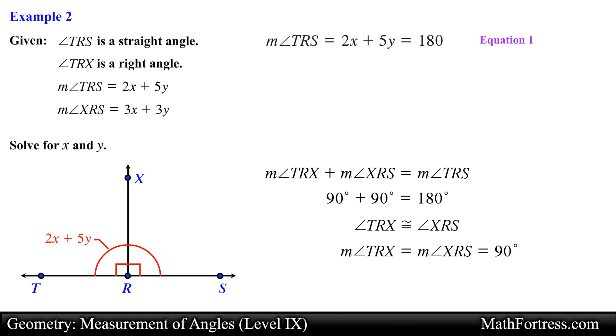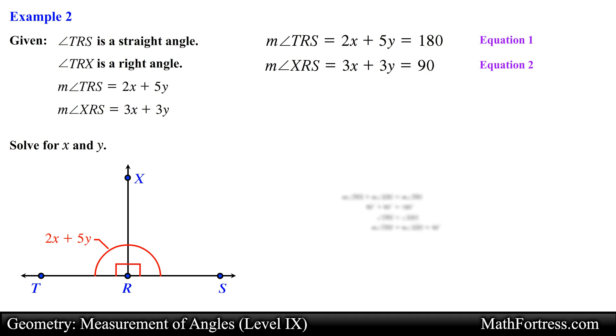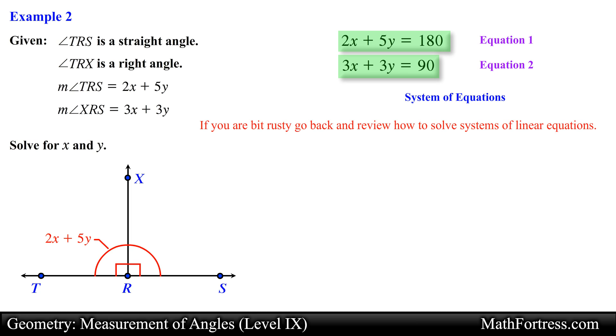Now we can equate the algebraic expression for the measurement of angle XRS with 90 degrees. Notice that we now have two equations and two unknowns. At this point the problem becomes a system of equations problem similar to the ones covered in a typical beginning algebra course.